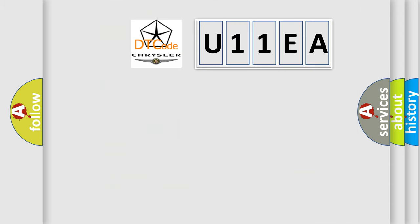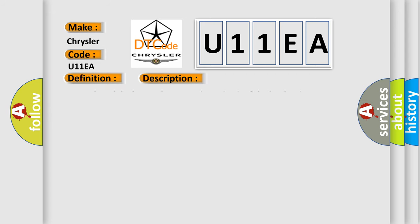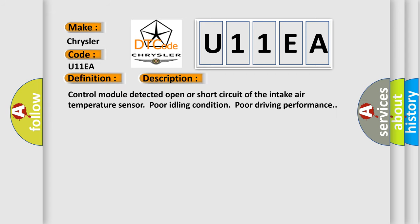So, what does the diagnostic trouble code U11EA interpret specifically for Chrysler car manufacturers? The basic definition is: Intake Air Temperature Circuit High Input. This is a short description of this DTC code: the control module detected an open or short circuit of the intake air temperature sensor, resulting in poor idling condition and poor driving performance.